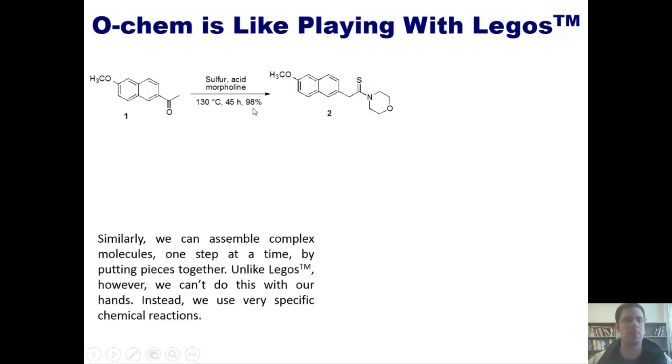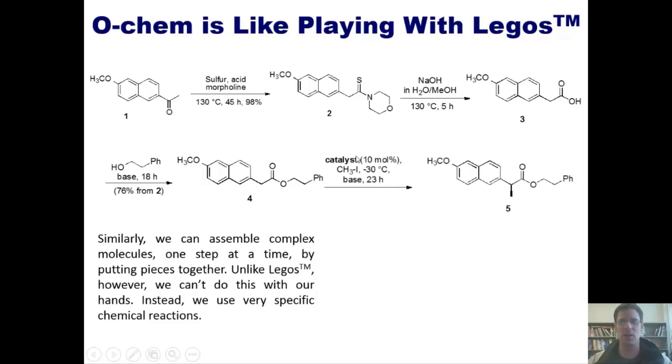You might also notice that this reaction proceeded in a 98% yield, which is pretty good. At this point, we took molecule 2 and treated it under these conditions to convert it into molecule 3. Molecule 3 was then manipulated further using these conditions to turn it into molecule 4. This gave, by the way, a 76% yield over two steps for molecule 2 to molecule 4.